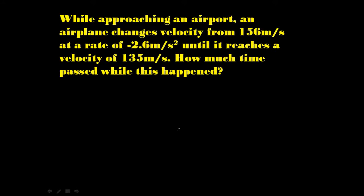So, let's try this problem. While approaching an airport, an airplane changes velocity from 156 meters per second at a rate of negative 2.6 meters per second squared until it reaches a velocity of 135 meters per second. How much time passed while this happened? That's kind of an interesting question. First thing worth noting is that the acceleration rate, negative 2.6 meters per second squared, is not changing. It's constant acceleration. But notice that the velocity does change, just like I said before.